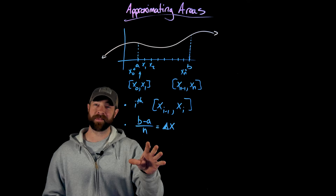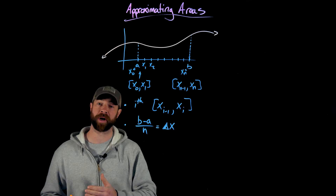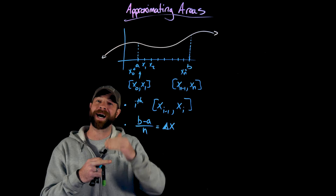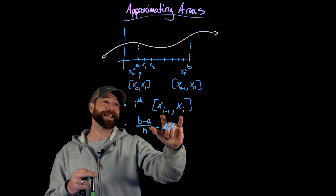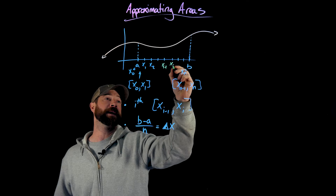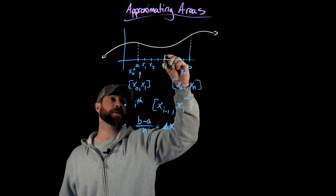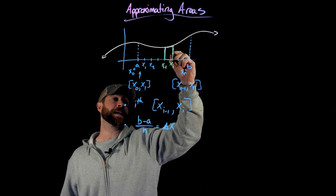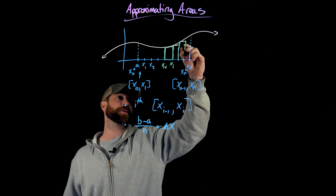These pieces of information are going to be really important for the two approximation strategies I'm about to show you: the left endpoint approximation and the right endpoint approximation. The width of the interval — delta X — will be the width of those little rectangles. The height of the rectangle will be defined by how we choose the function values. We're either going to choose the leftmost point of these sub-intervals or the right. So for the ith interval, we decide whether to use the left-hand side or the right-hand side for the top of the rectangle.